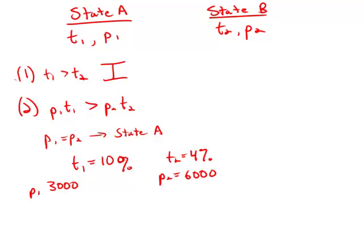Well now if we do 10 times $3,000 we get $30,000. If we do 4 times $6,000 that's $24,000. So indeed P1 times T1 is greater than P2 times T2.